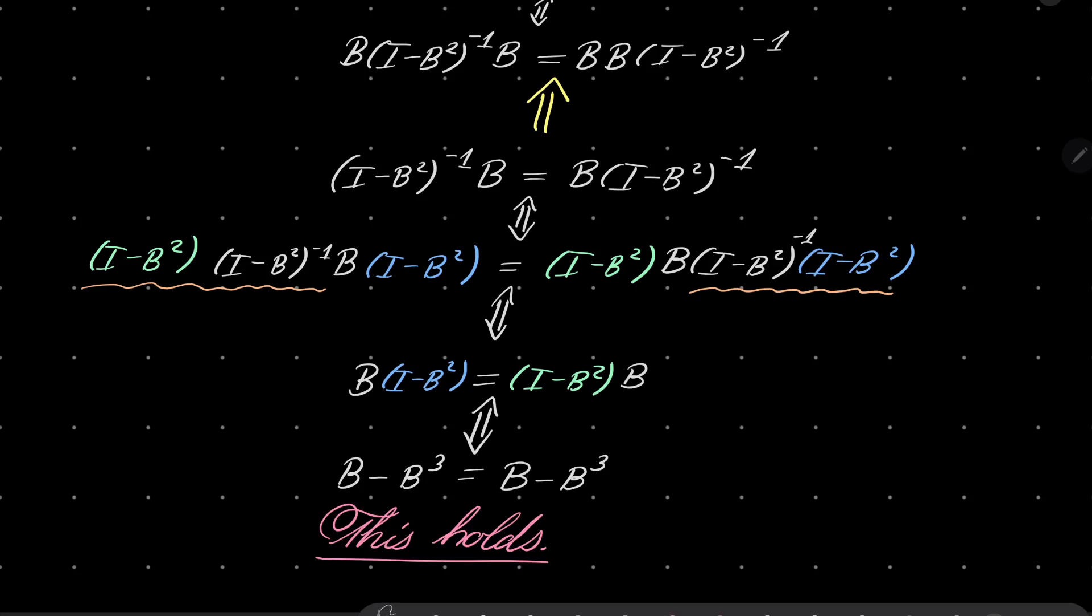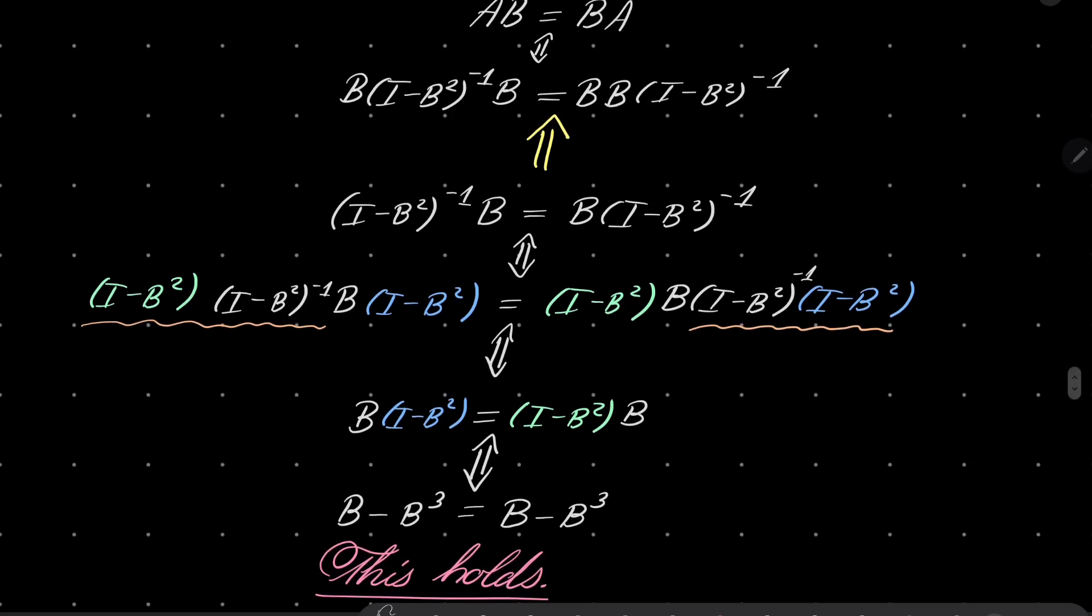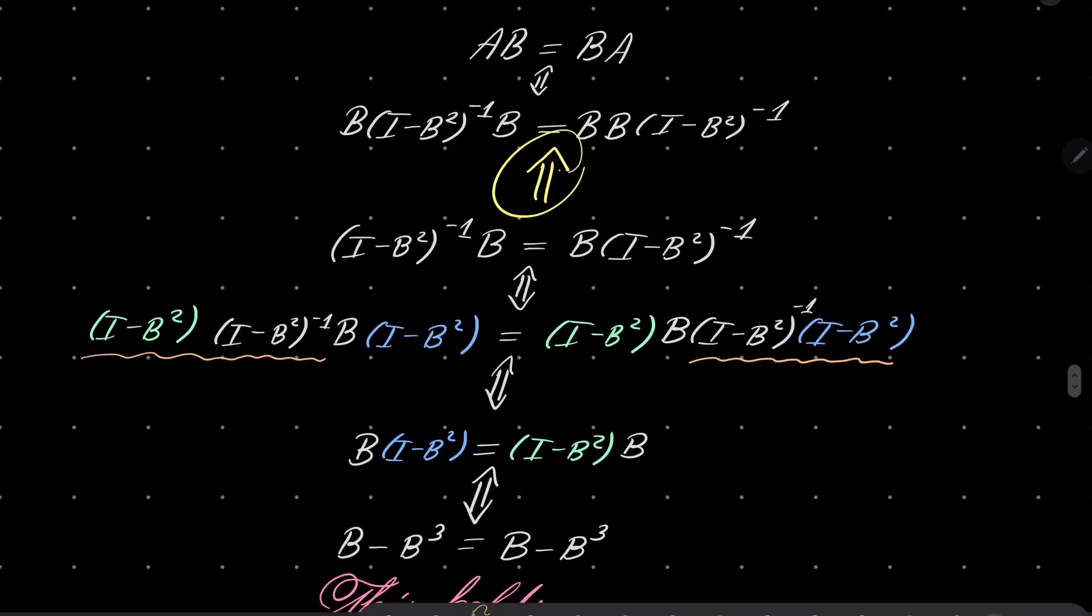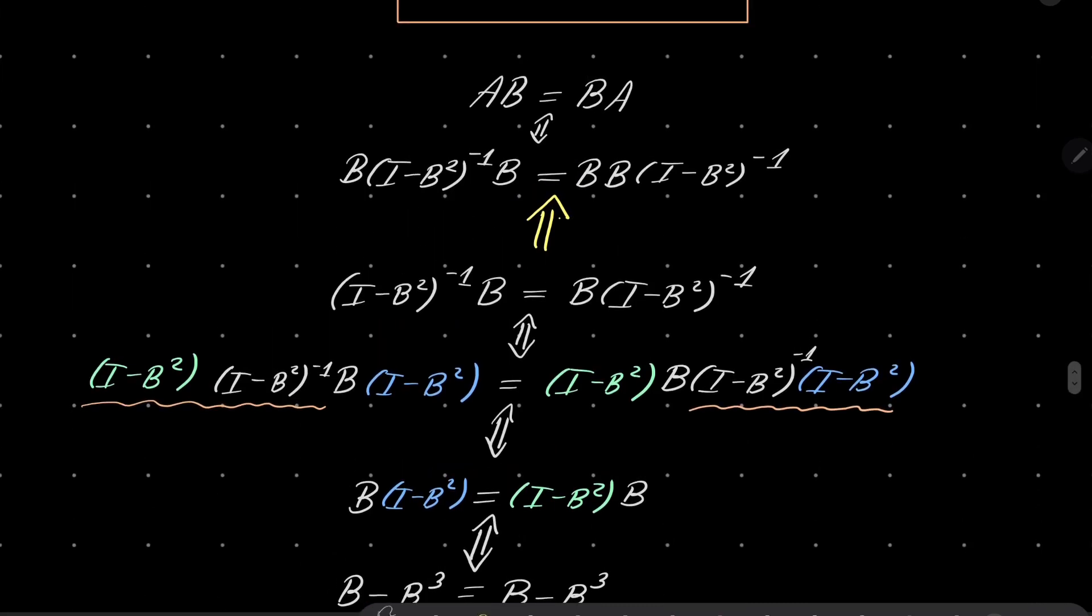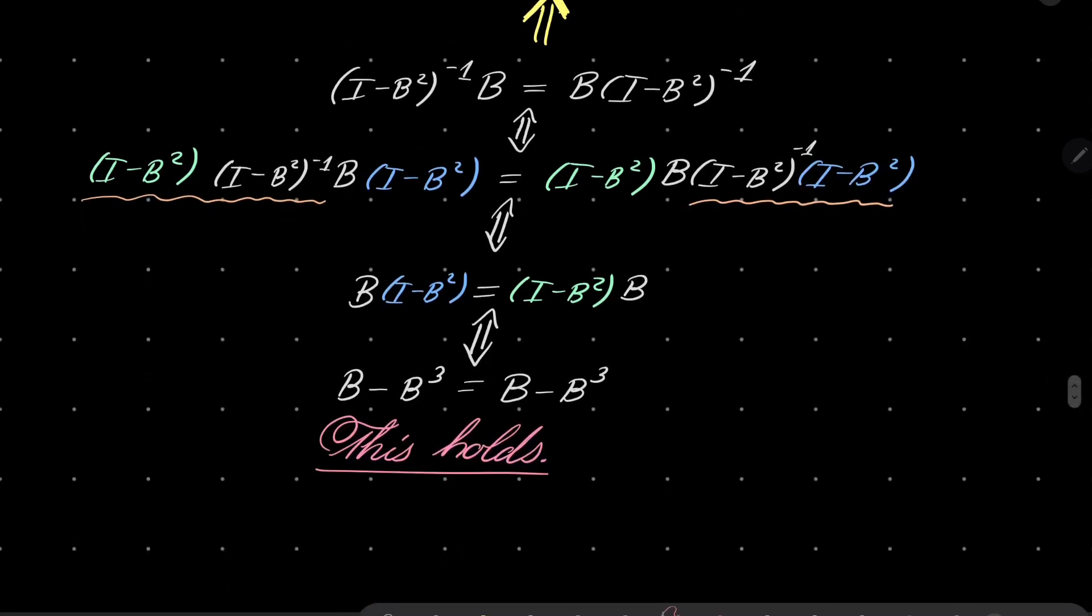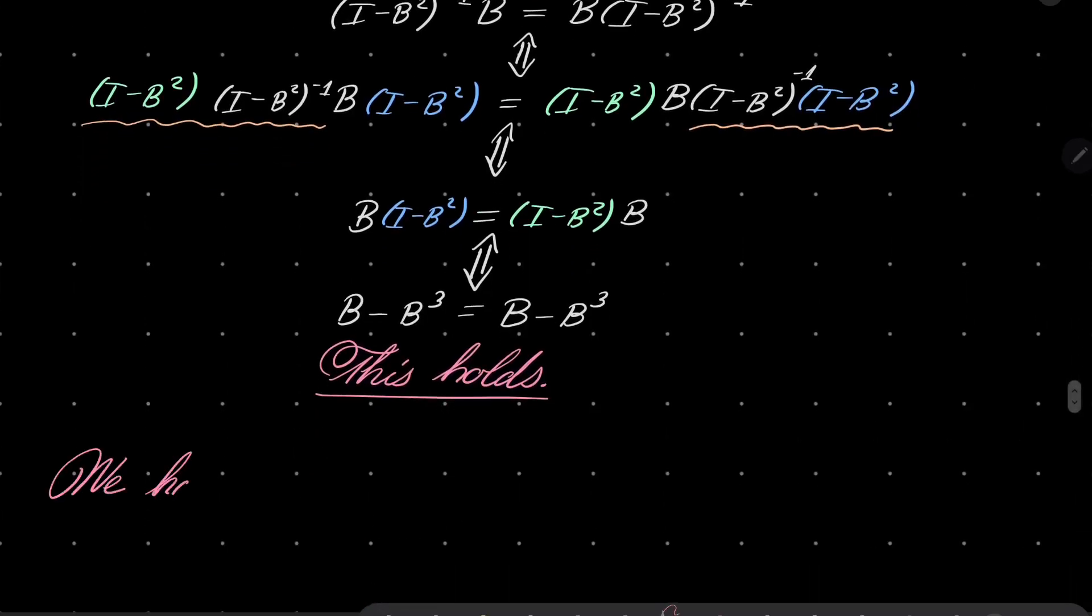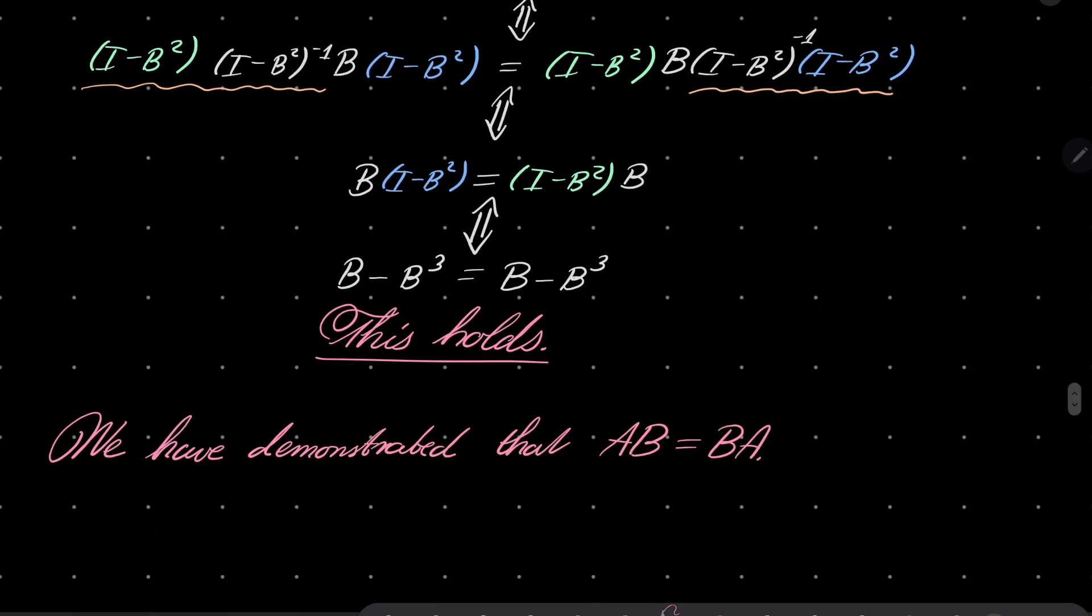So notice that from a true statement, we are able to deduce that AB equals BA. So AB equals BA. In fact, they commute. Notice crucially, we have implication in the right direction. It's all what we wanted. We have demonstrated that AB equals BA, and this closes our proof.